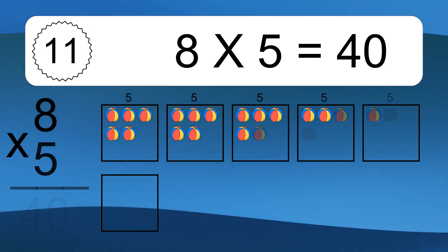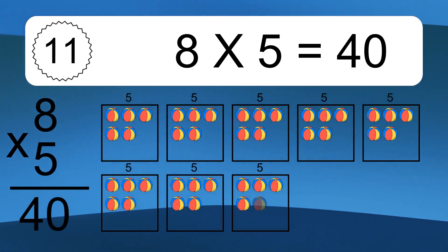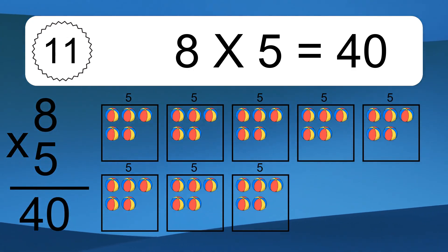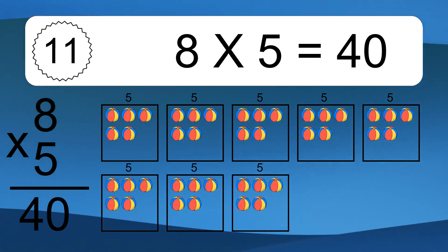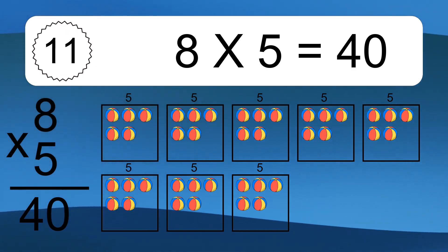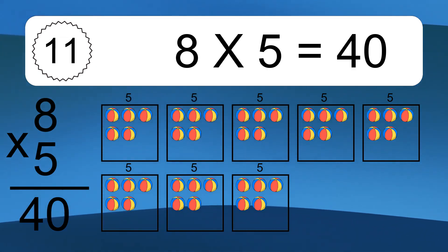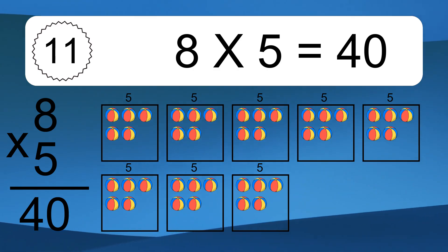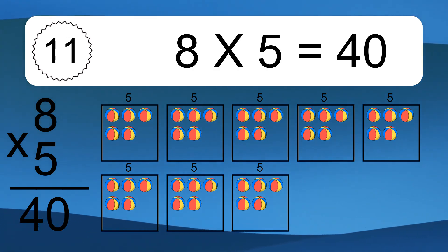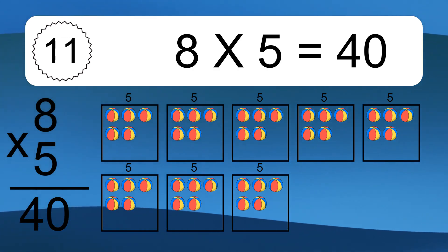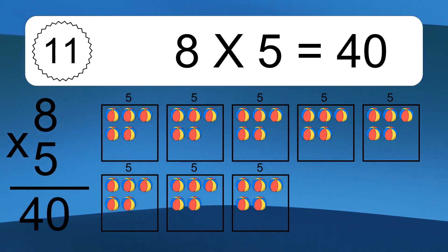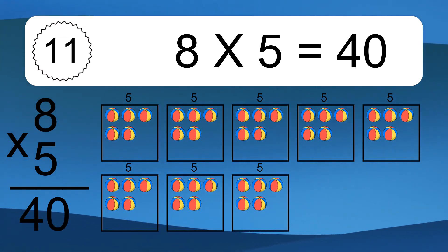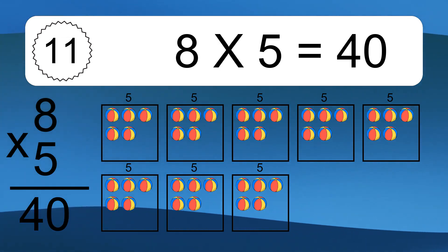8 times 5 equals 40. We have 8 boxes and each box has 5 colorful balls inside. If you count all the balls in all the boxes together, you will have 8 times 5 balls. This equals 40 balls.